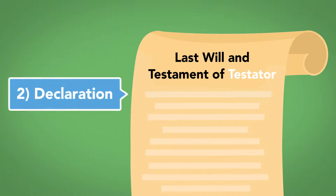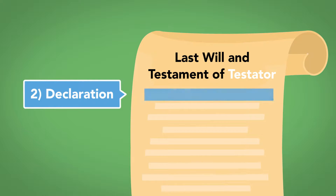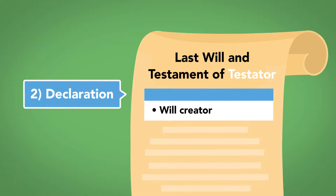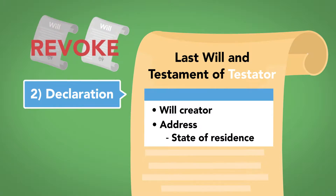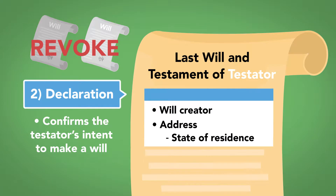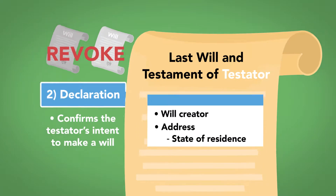Number 2: Declaration. The first line of a will, the Declaration, names the person creating the will, including her address to confirm her state of residence. This provision often identifies the document as a will and revokes other previously created wills. It confirms the testator's intent to make a will, which is an element of every valid will.